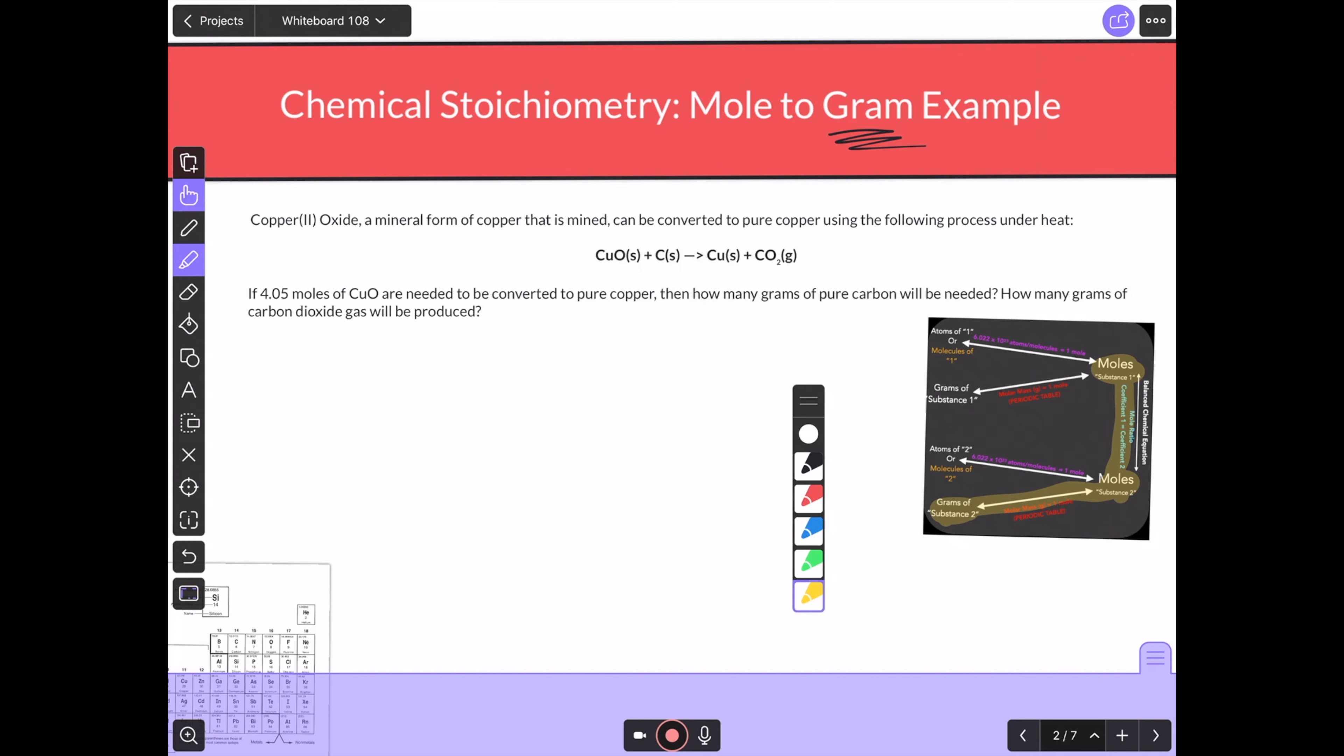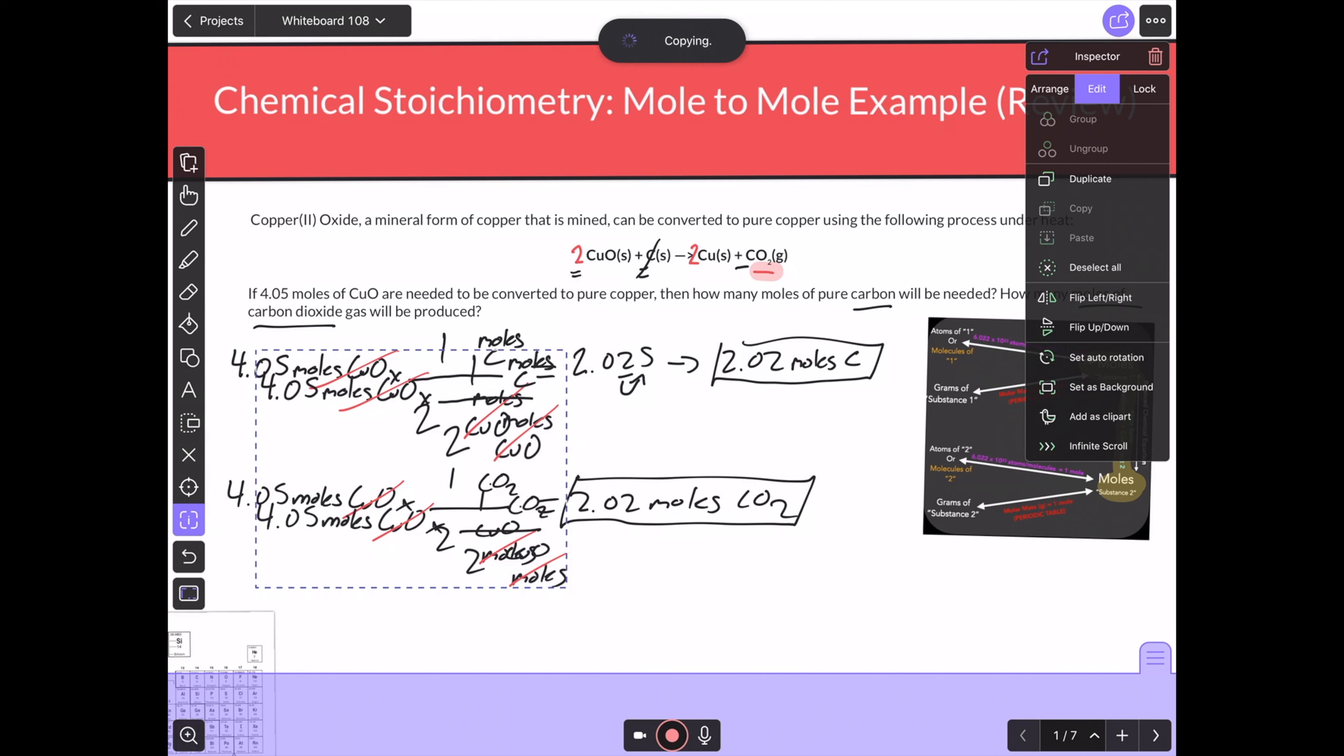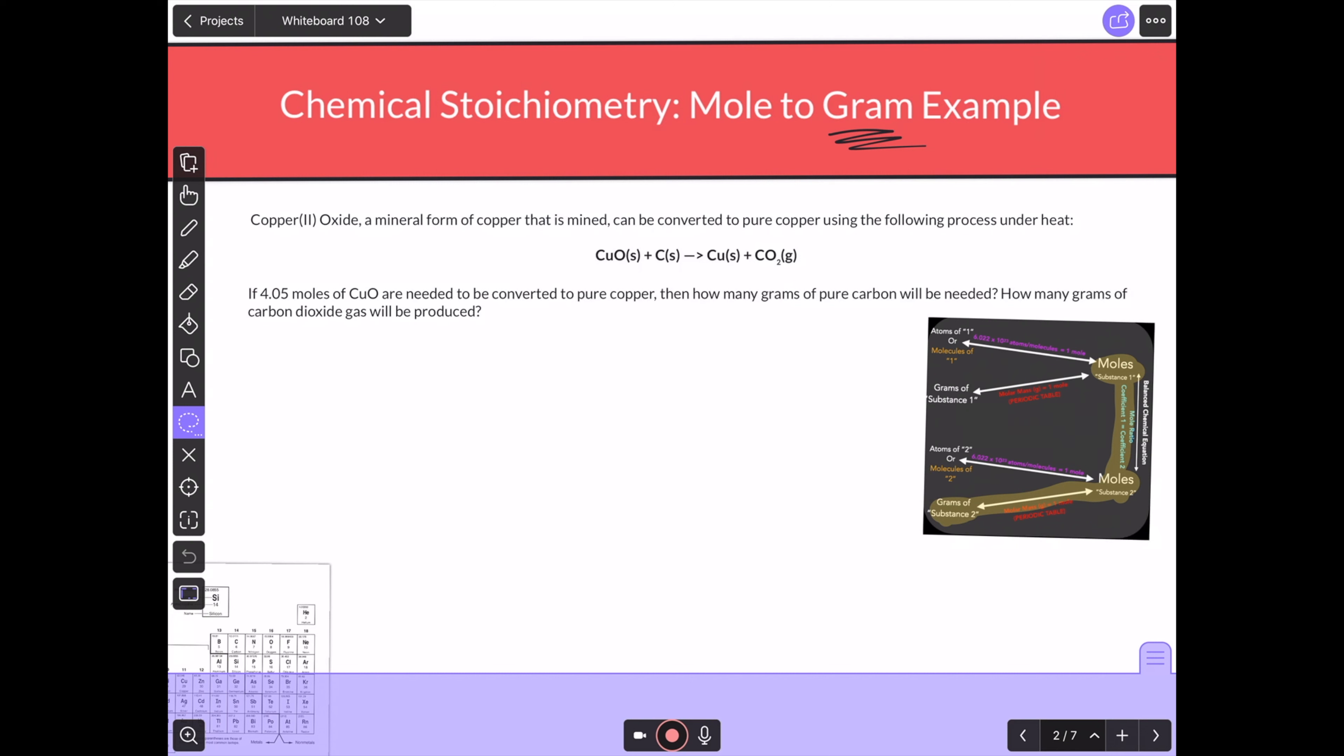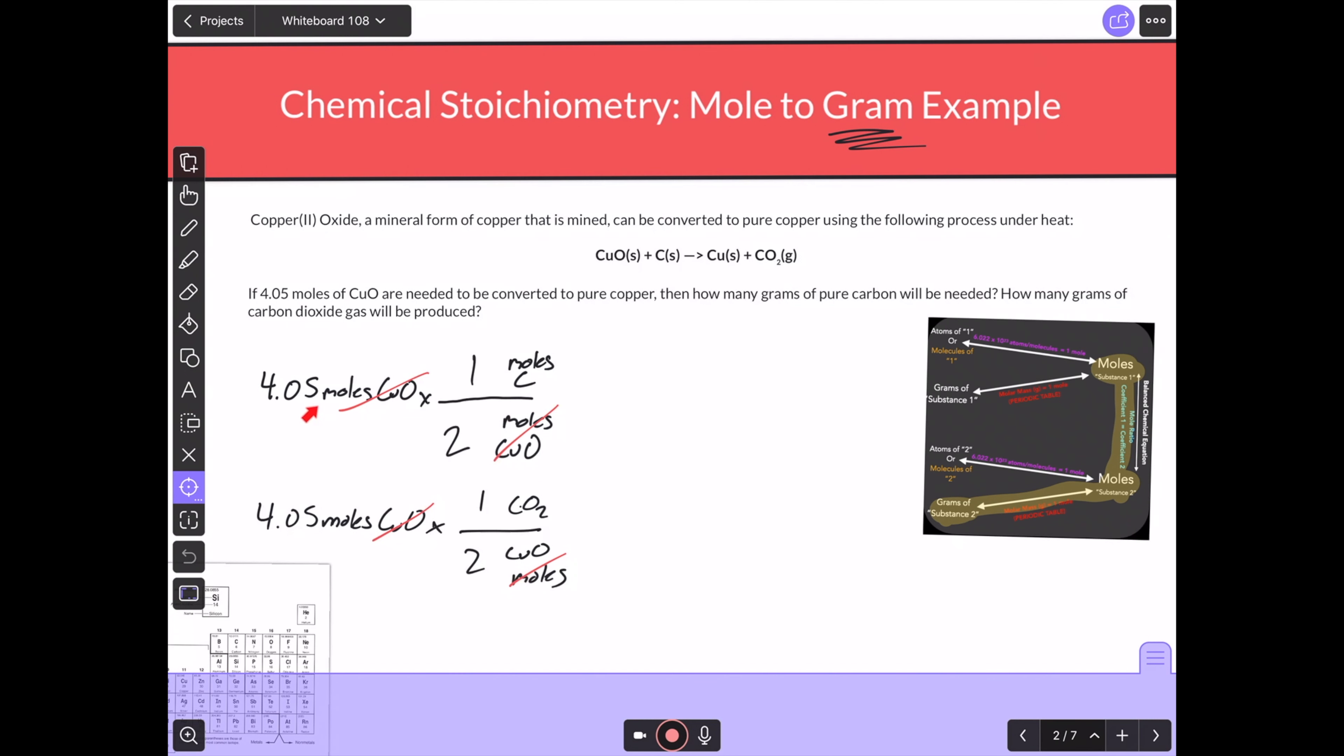So what I'm actually doing is going back to my problem from before on this page, and I'm doing this first step here just like I did, but I'm adding another step too. So I'm still going to start with my 4.05 moles of copper oxide for both, and I'm still going to convert to moles of those, right? Because that's this first step here. This is what I mean when I said I'm still doing a mole to mole conversion.